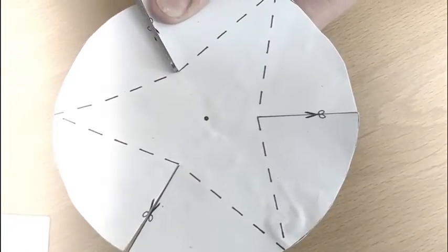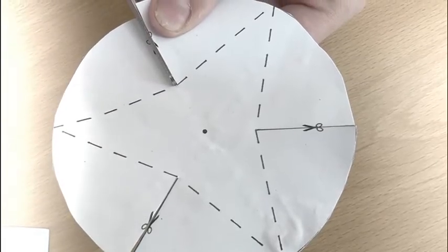Cut the lines to the circle, but remember only cut it to the dotted lines.